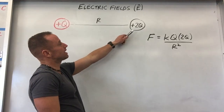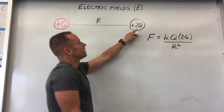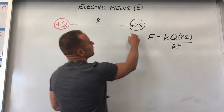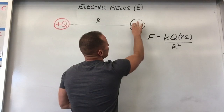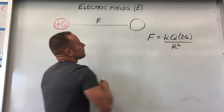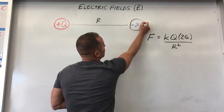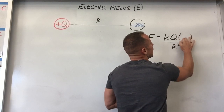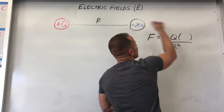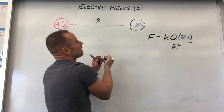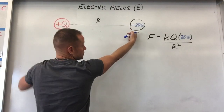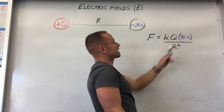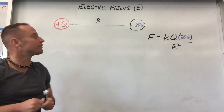In this case the force would be directed away, because they are like charges. If instead we swap that out for a minus 20q charge — a big negative charge — to calculate the strength of the force we only modify this part: the size of that charge is 20q. To get the direction, we look at the signs and notice that since it's oppositely charged, it would attract and the force would be to the left. So the strength goes like k times the first charge times the second divided by distance squared, and the direction comes from the signs of the charges.